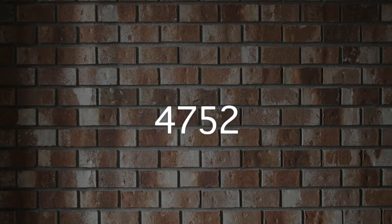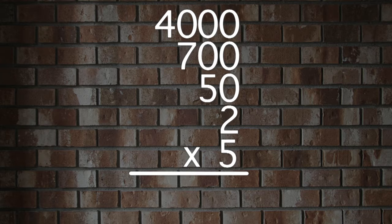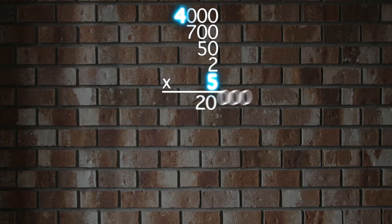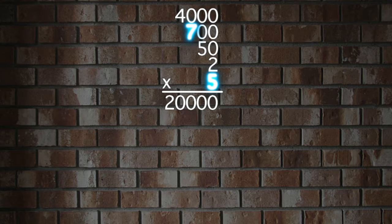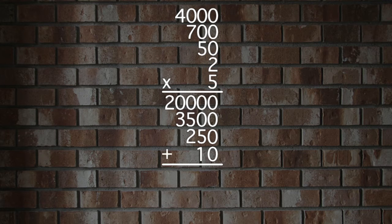While you might not know what 5 times 4,752 is, most people can figure out the pieces. Know what 5 times 4,000 is? Remember the rule of zero? 5 times 4 is 20 — add those three zeros — 20,000. And it's just as easy to figure out 5 times 700 is 3,500. 5 times 50 is 250, and 5 times 2 is 10. Take all those numbers, write them down, and add them up. It takes a little bit longer, but it's easy to do.